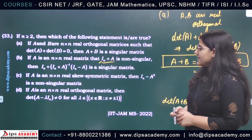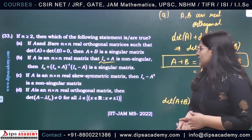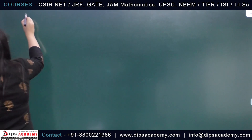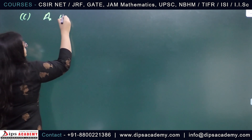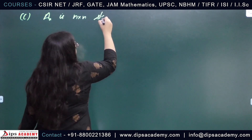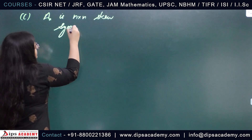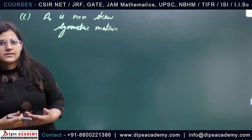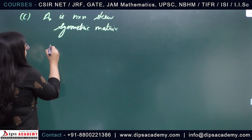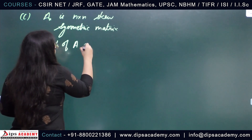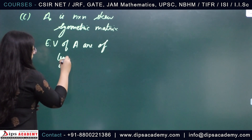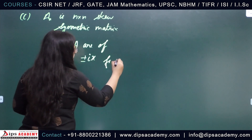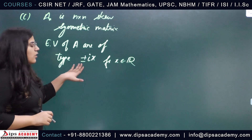Now we will move to statement C. Statement C states that if A is an n×n real skew-symmetric matrix, then I_n − A² is a non-singular matrix. For option C, A is an n×n skew-symmetric matrix. What do we know about eigenvalues of a skew-symmetric matrix? The eigenvalues of a skew-symmetric matrix are either 0 or purely imaginary — of the form ±iα for some α in ℝ.